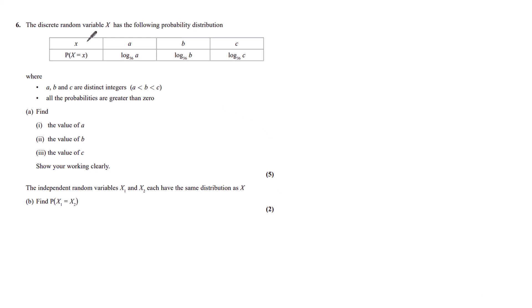Question 6. The discrete random variable x has the following probability distribution. If x is a, b, or c, then the probability of x is log base 36a, log base 36b, and log base 36c, where a, b, and c are distinct integers with a less than b less than c. All the probabilities are greater than 0.